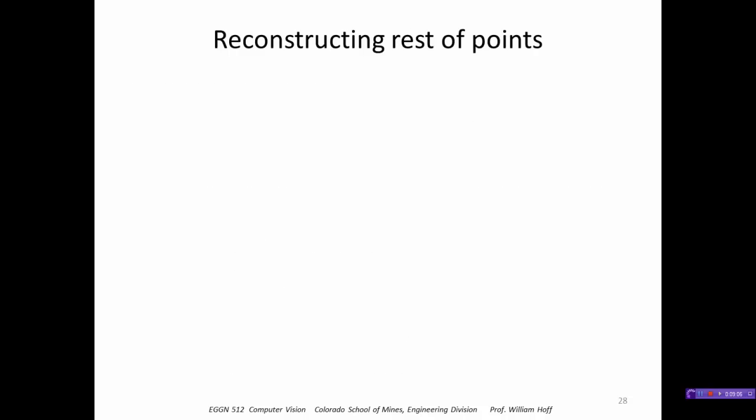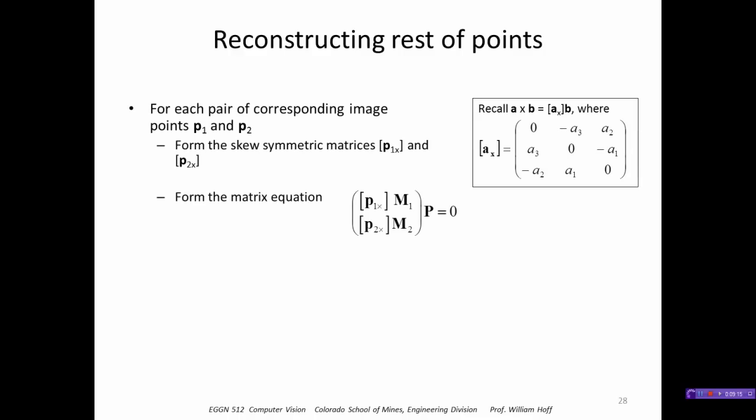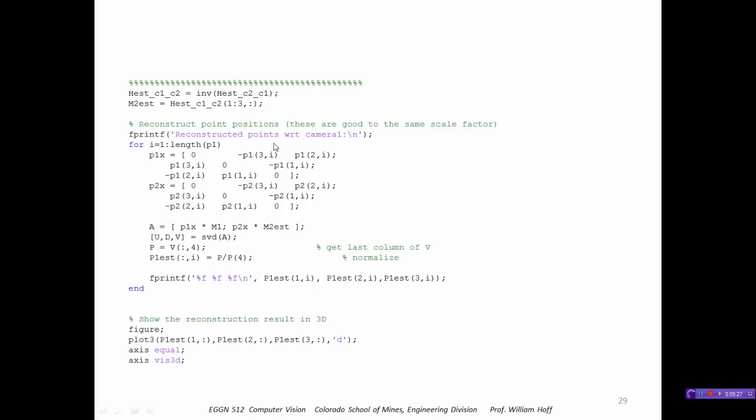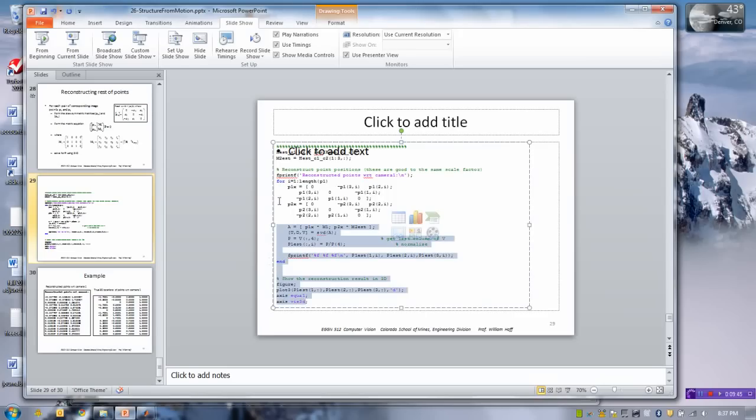Almost done here, let's just reconstruct the rest of the points now that we know the true pose between the two views. So we just do the triangulation for every one of the corresponding pairs, solving the matrix equation A P equals 0. So this code does that. It goes through all the points in P1, does the triangulation to find the location of the 3D point with respect to camera 1, and here we're going to plot it. So let me just grab this code and I'll append it to that program I just ran.